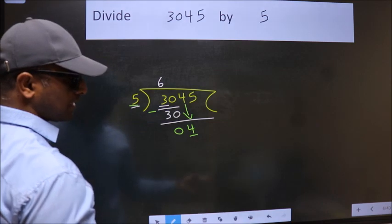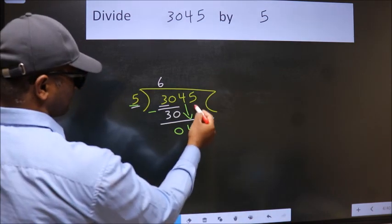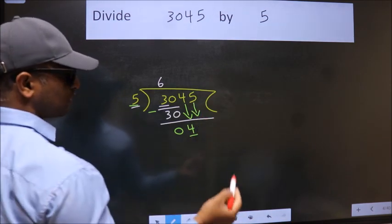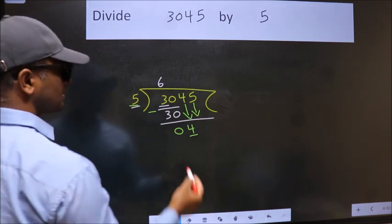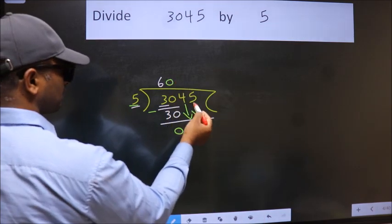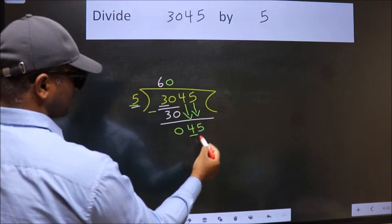So we should bring down the second number. And the rule to bring down second number is put 0 here. Then only we can bring down this number. So, 45.